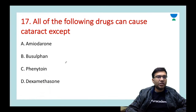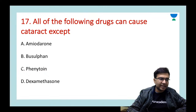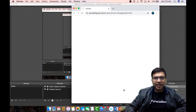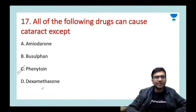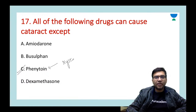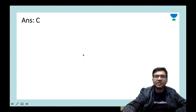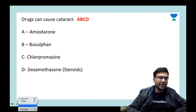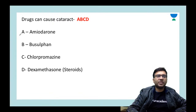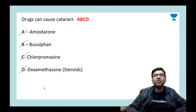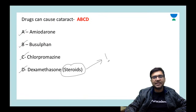Next question: all of the following can cause cataract EXCEPT? Options: amiodarone, busulfan, phenytoin, dexamethasone. The answer is C — phenytoin (which can cause nystagmus). The drugs causing lenticular opacities can be remembered with the simple mnemonic ABCD: A = amiodarone, B = busulfan, C = chlorpromazine, D = dexamethasone/steroids. Steroids cause posterior subcapsular cataract.